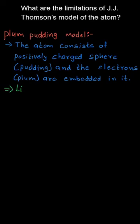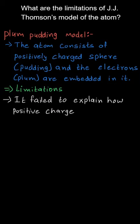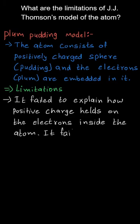So let us now list down the limitations of J.J. Thomson's model. The first limitation was that he was not able to explain how the positive charge is helping the negative charge particles, that is electrons, to be embedded inside the atom, and he also failed to explain how the atom is generally stable.